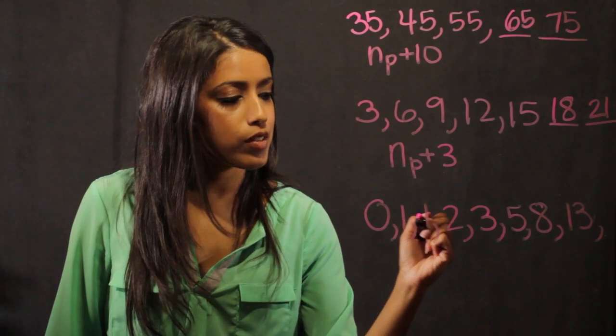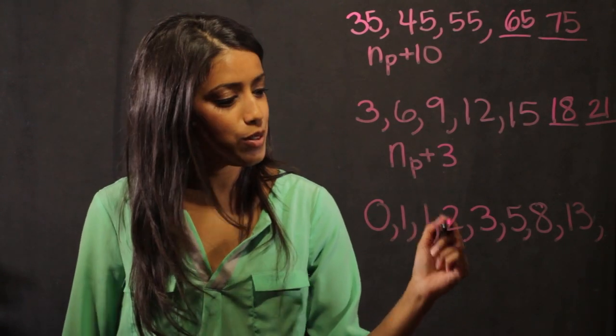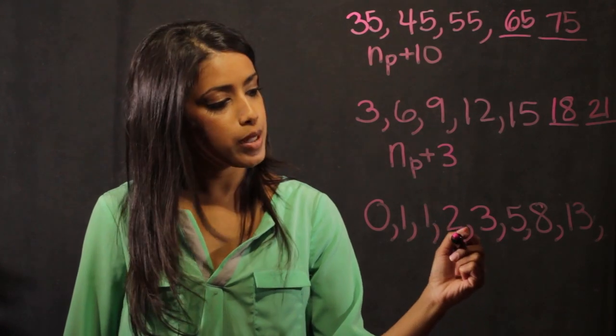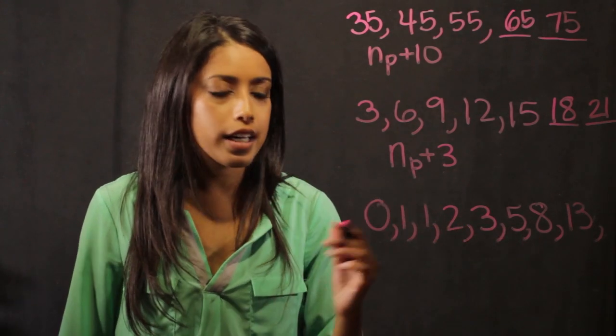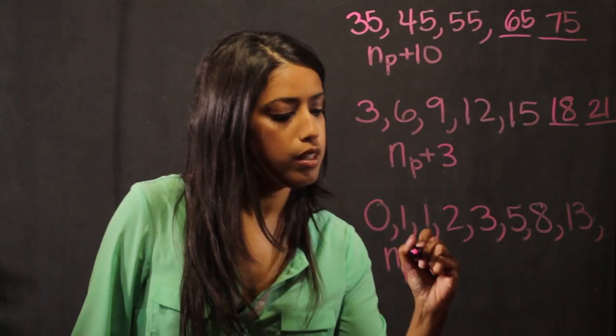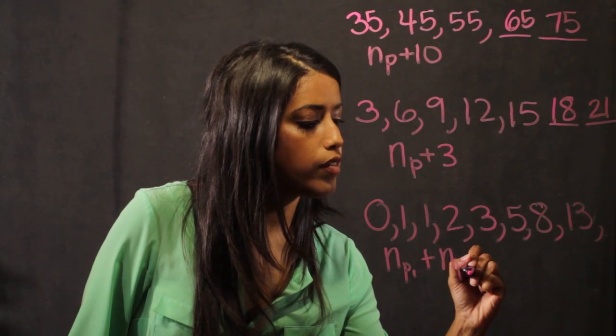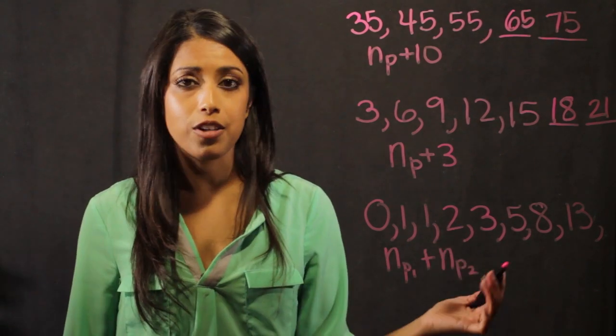0 plus 1 gives me 1, 1 plus 1 gives me 2, 2 plus 1 gives me 3, 3 plus 2 gives me 5. And we recognize that pattern by writing it in previous, the first one, and plus in previous of the second one. And that's going to give us our next numbers.